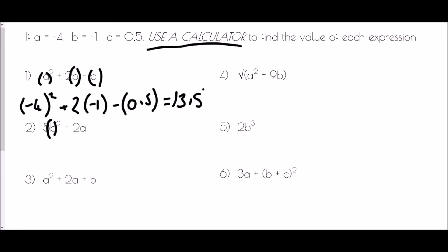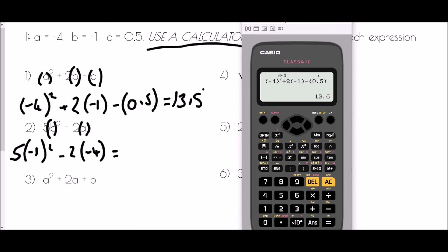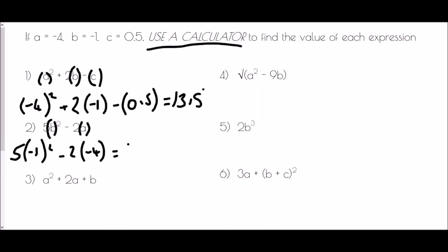With 5b squared take away 2a, I place brackets wherever there is a letter to guarantee the calculator works correctly with negative values. So that's 5 bracket b, which is negative 1, close bracket squared, take away 2 bracket negative 4, close bracket. We get our answer straight out: 13.